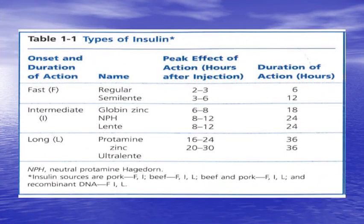There are different types of insulin used to treat type 1 and occasionally type 2 diabetes. We have fast-acting (regular and semi-lente), intermediate-acting (NPH or lente), and long-acting (ultra-lente) insulins.